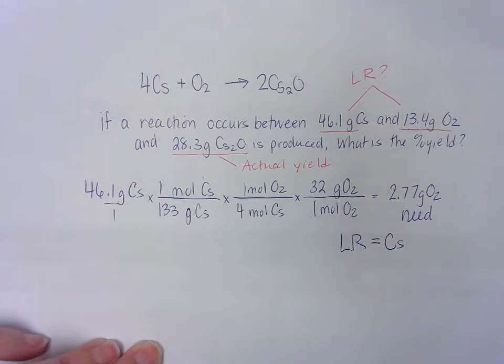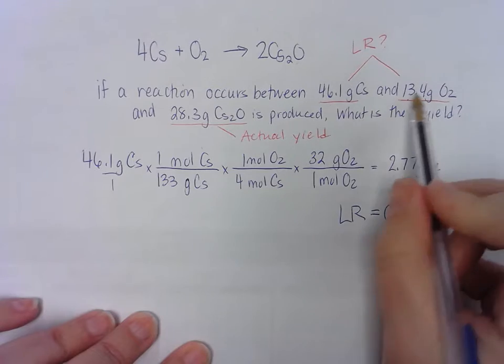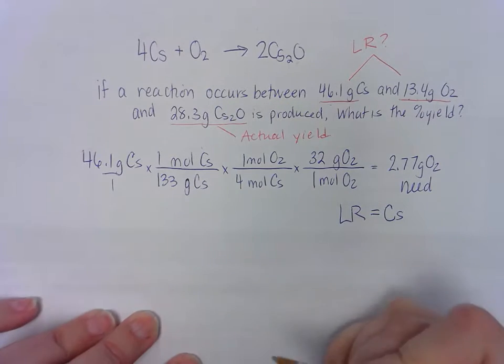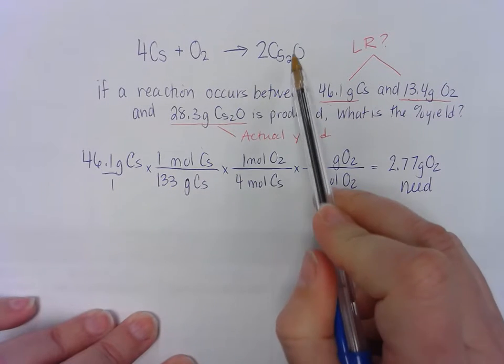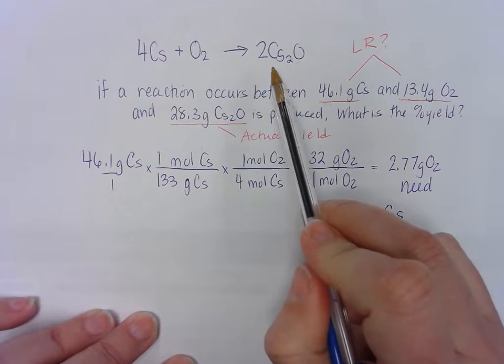So what that's telling me is between these two substances, the cesium is going to run out first. I know that whenever I use up all my cesium, I'm going to produce as much as I possibly can of this CS2O.